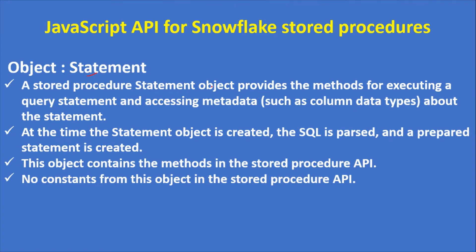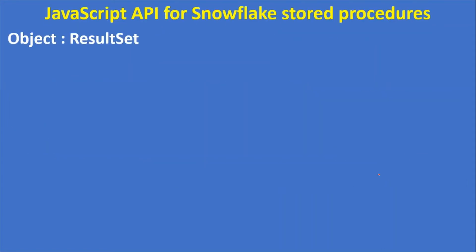The second object is Statement. A stored procedure Statement object provides methods for executing a query and accessing metadata such as column data type. At the time the Statement object is created, the SQL is parsed and a prepared statement is created. This object contains methods in the stored procedure API but no constants.